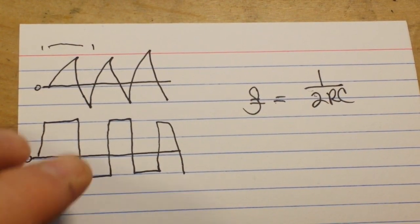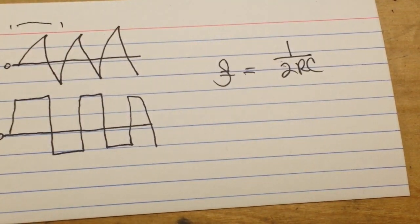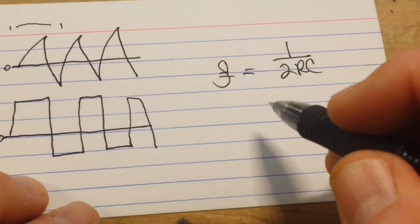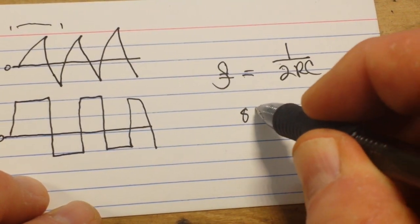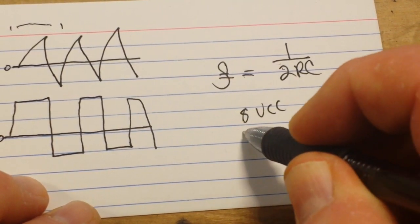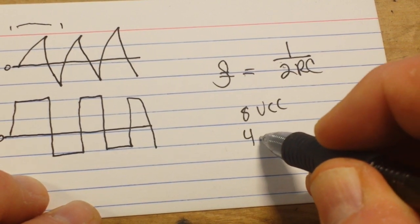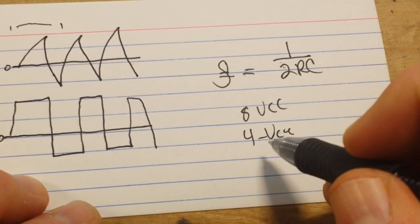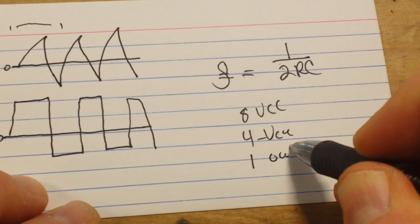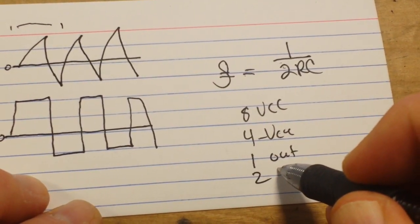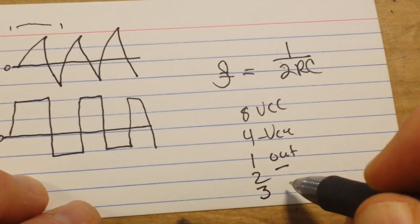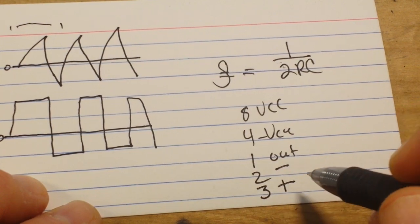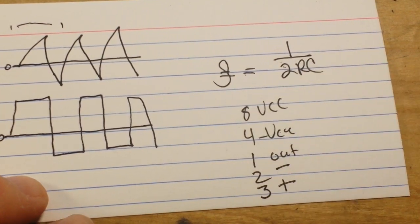Are you with me so far? Good. Oh, you know what, before we get into that, let's talk about what we're using here. The TL072, pin 8 is VCC, pin 4 is negative VEE, pin 1 is our output, pin 2 is our inverting input, and pin 3 is our non-inverting input. Alright, now the circuit.